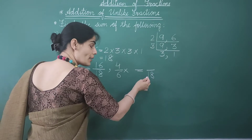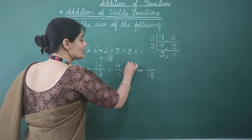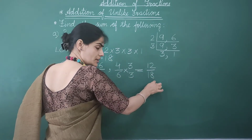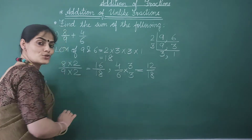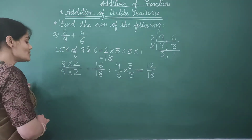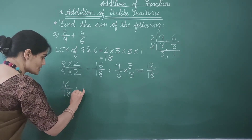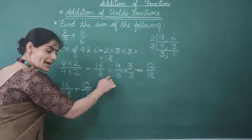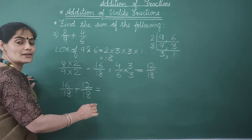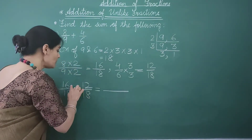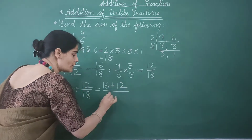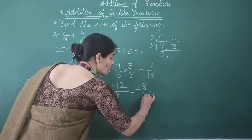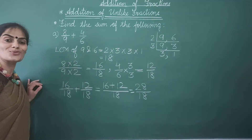6 should be multiplied by 3 so that it equals 18. So the numerator is also multiplied by 3: 4 times 3 gives us 12, and 6 times 3 equals 18. Now we have the two like fractions to be added. To find the sum of like fractions, we write the sum of the numerators over the common denominator. So 16 plus 12 upon 18 gives us 28 over 18. This is the sum of these two unlike fractions.